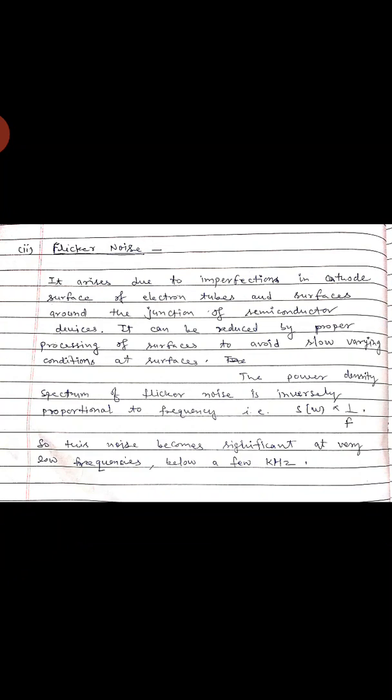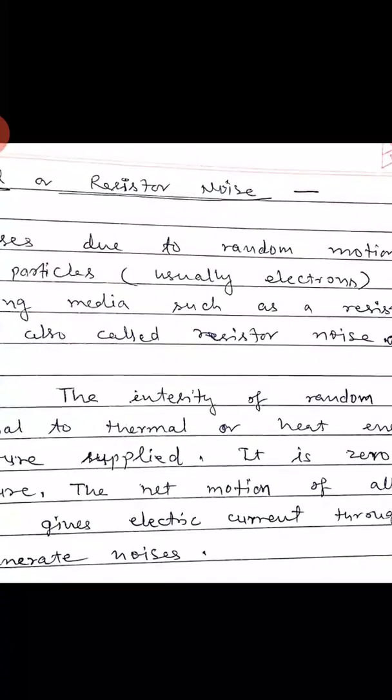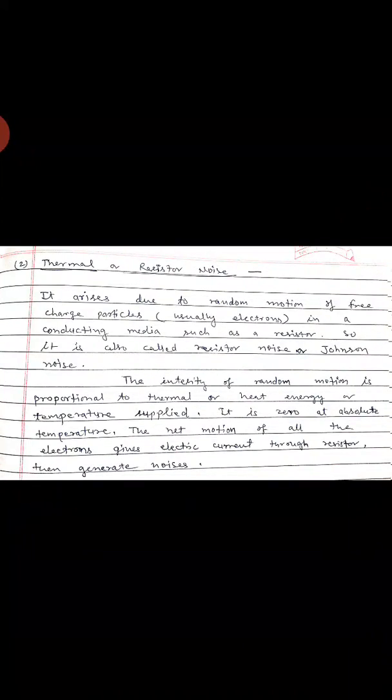The next type of internal noise is thermal noise, also called resistor noise or Johnson noise. It is due to the variation in temperature — thermal or heat energy produced by the random motion of free charge carriers in a conducting medium such as a resistor. The intensity of random motion is proportional to the thermal energy or temperature supplied, and it is zero at absolute zero temperature.